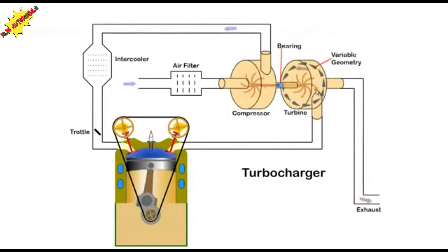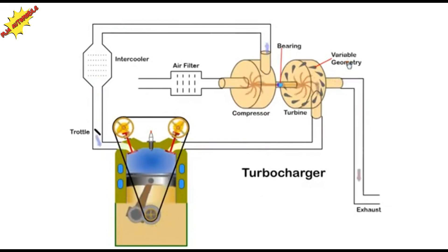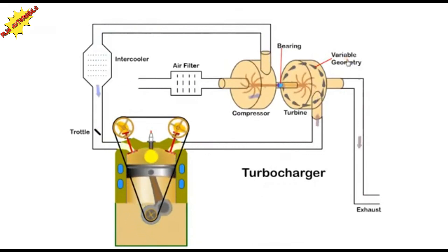At high exhaust gas flow, the vanes are opened, thus reducing gas velocity. At low speeds, the vanes are again closed.